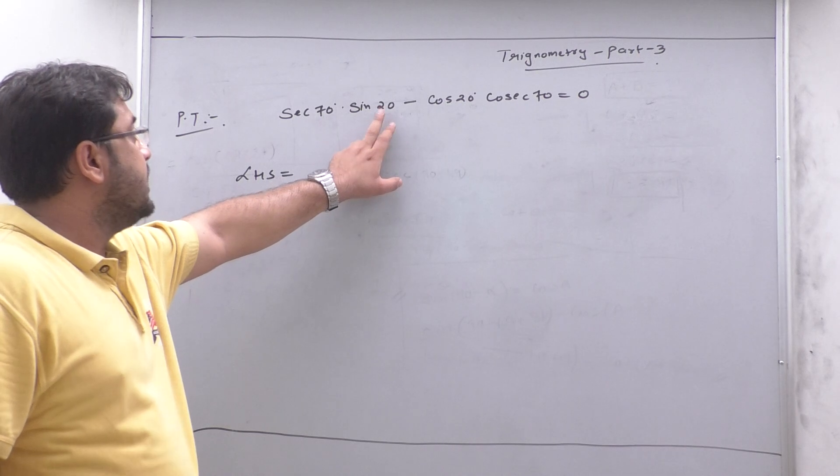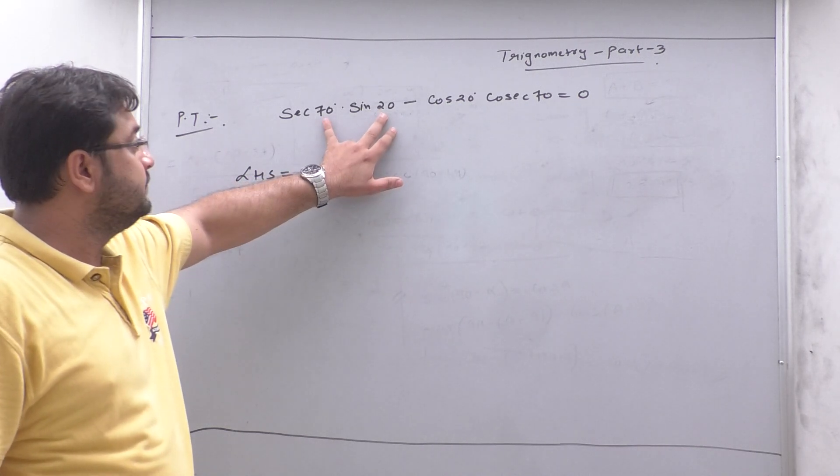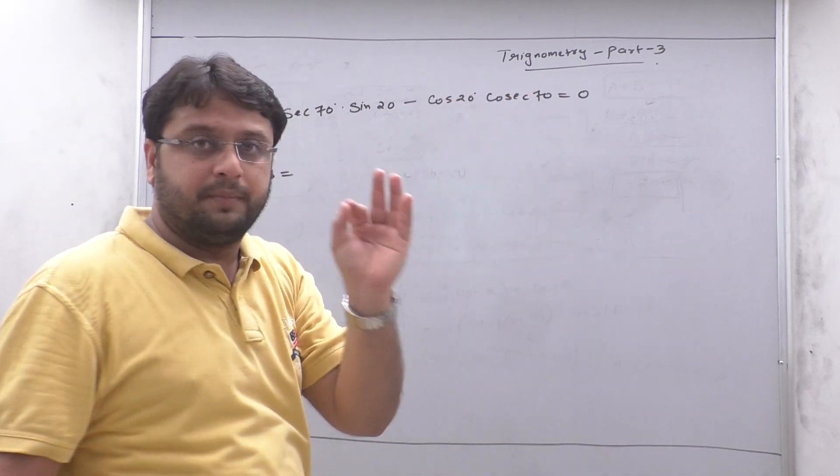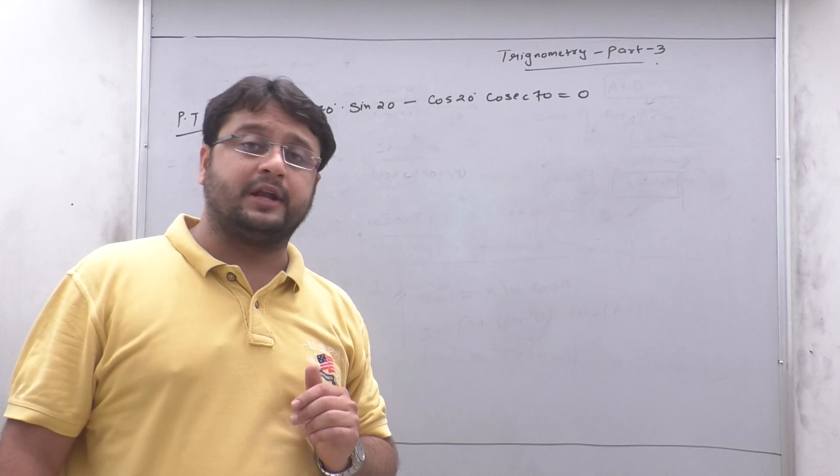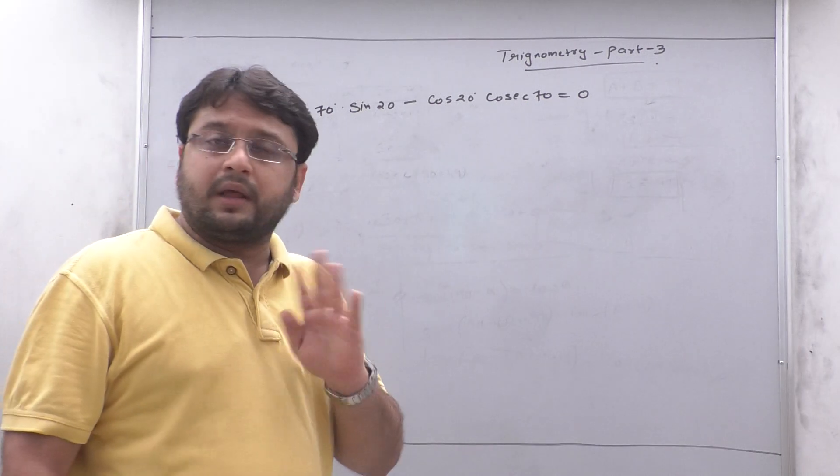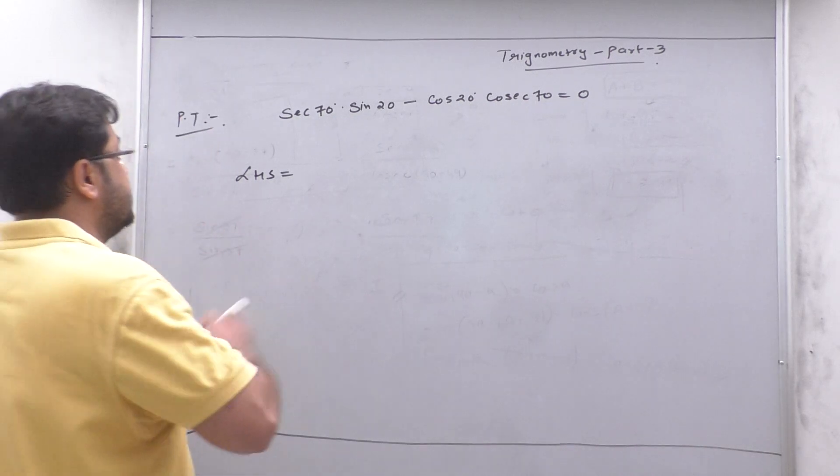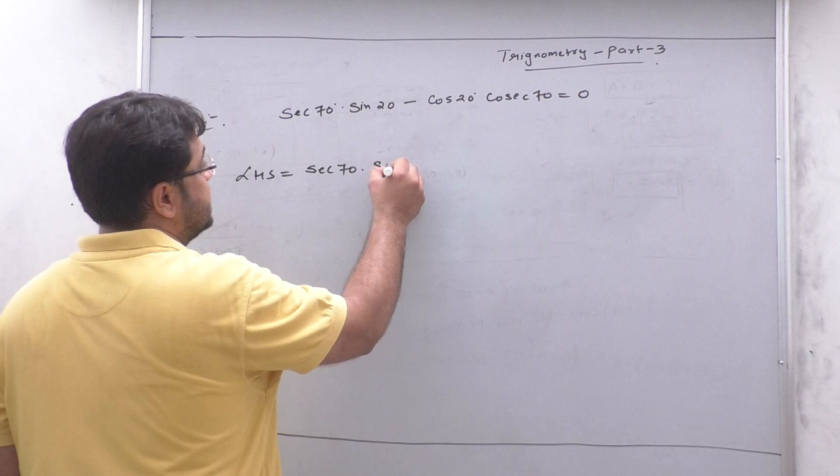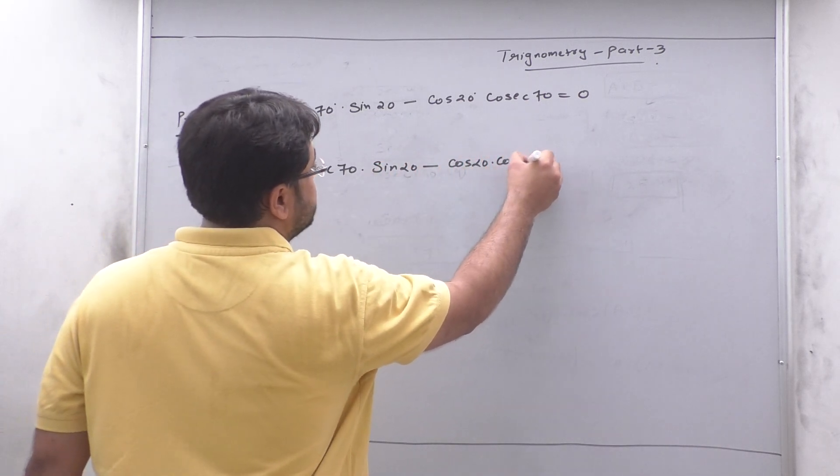This is 70, this is 20. If you have to say, when you have to say, then it is 70. As you have to say, the problem is 90 minus theta. What is the problem? The problem is that you don't have a problem. You have to practice more and more. Let's write sec 70 sin 20 minus cos 20 into cos 70.